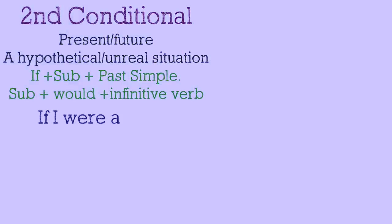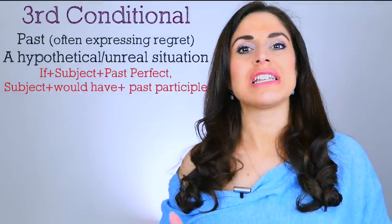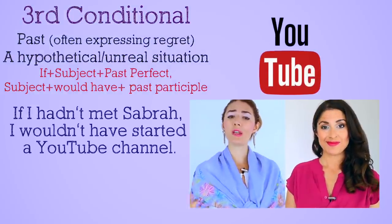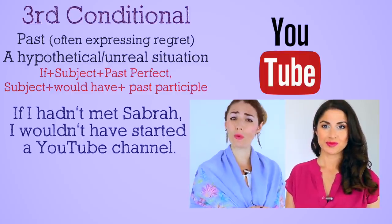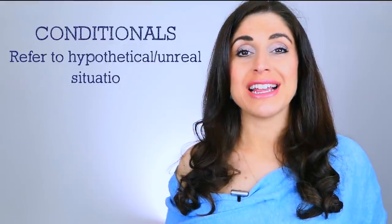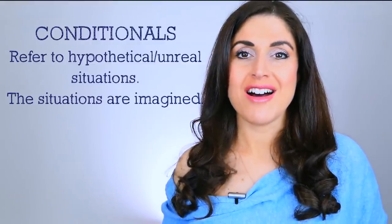'If I were a cat, I would sleep all day.' I'm not a cat and that's never going to happen — that is a present unreal situation. With third conditional, we are referring to the past. We use it to imagine a different past situation and past result. For example: 'If I hadn't met Sabra, I wouldn't have started this YouTube channel.' These situations are all hypothetical and unreal.